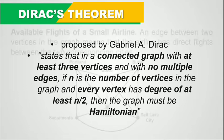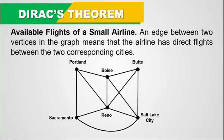Now let's take this example. This graph represents the available flights of a small airline. An edge between two vertices in the graph means that the airline has direct flights between the two corresponding cities. For example, Portland to Reno — we have an edge connecting the vertex of Portland and of Reno. So this edge represents the direct flights of these two cities, meaning Portland and Reno have direct flights.